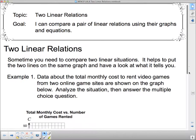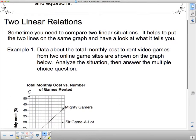So we're looking at two linear relations. Sometimes you need to compare two linear situations and it helps to put the two lines on the same graph and have a look at what it tells you. For example one, data about the total monthly cost to rent video games from two online game sites are shown on the graph below. Analyze the situation and then answer the multiple choice question.